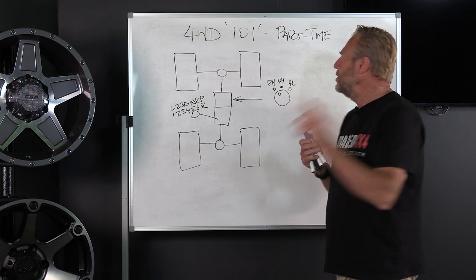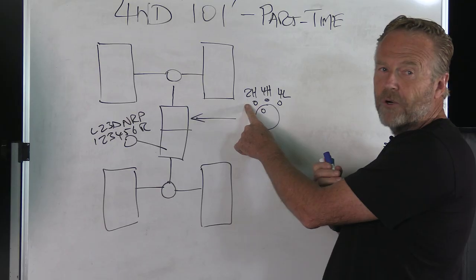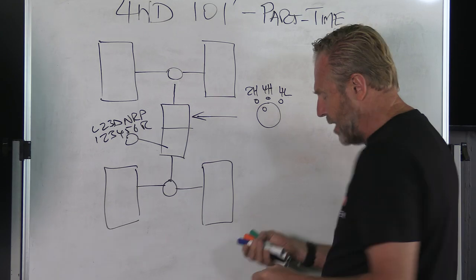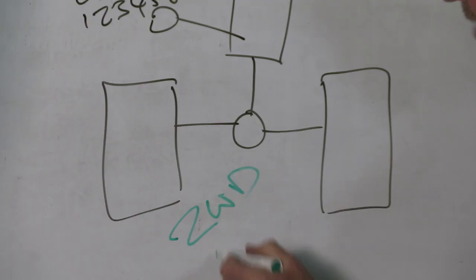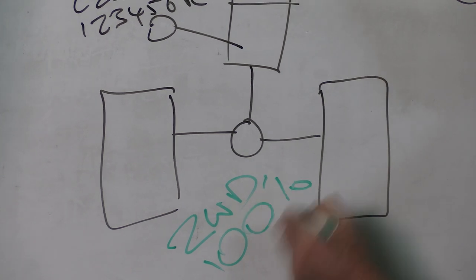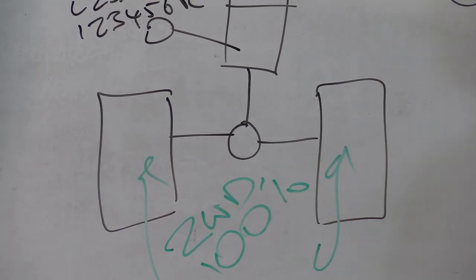Now when we're in 2WD, which is our mode for around town, all of the energy goes out through the back wheels. In 2WD we have 100% of that vehicle's energy going out through the rear wheels.